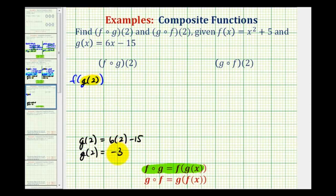And since g of 2 is equal to negative 3, this composite function value is just equal to f of negative 3. And now we'll substitute negative 3 into function f, where f is equal to x squared plus 5. So we'd have negative 3 squared plus 5.